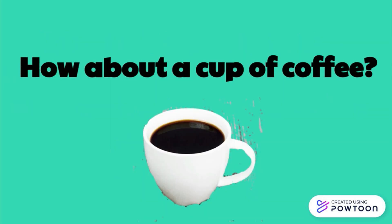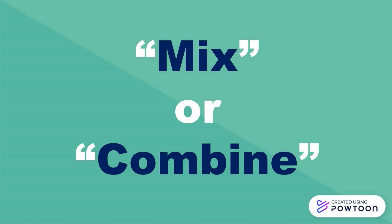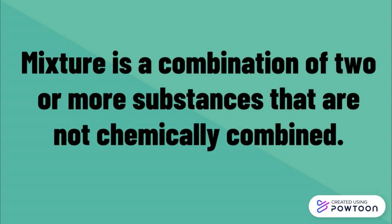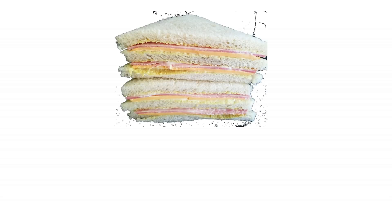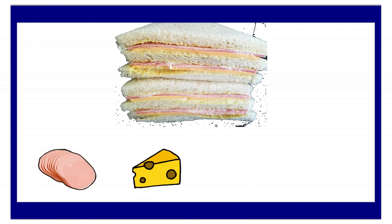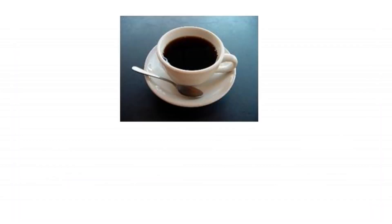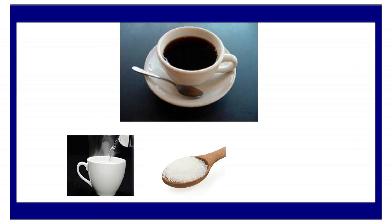What did you do to the different materials to create a ham and cheese sandwich? How about a cup of coffee? When you mix or combine different materials, we call it a mixture. Mixture is a combination of two or more substances that are not chemically combined. In our activity, we prepared some mixtures. The ham and cheese sandwich was formed by combining the ham, cheese, mayonnaise, and bread. A cup of coffee was formed by combining water, sugar, and coffee.